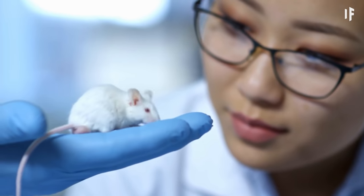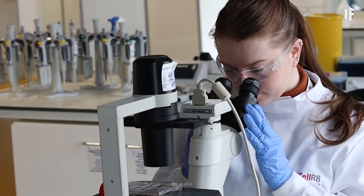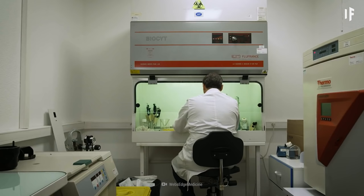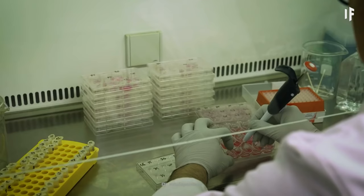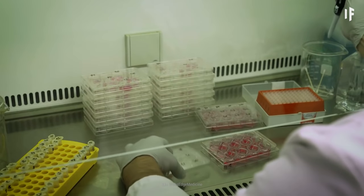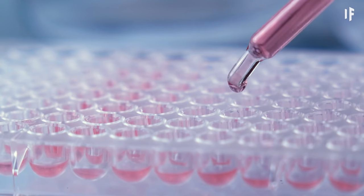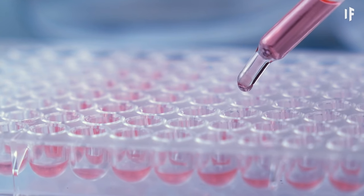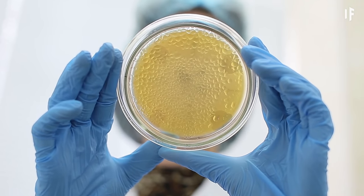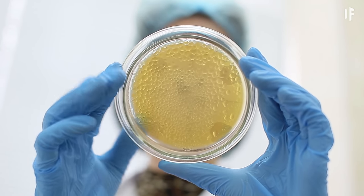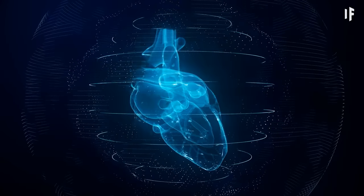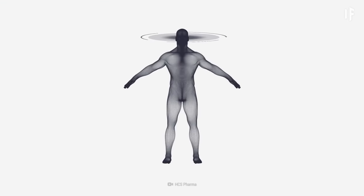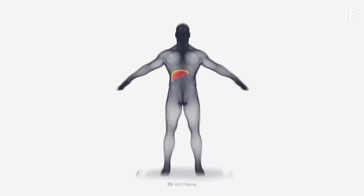So if we stopped animal testing, we'd need to advance in vitro technology. Scientists would take some skin cells from people with a specific illness. They would make the skin cells act more like stem cells. Then, the researchers could convert those cells into any specialized cell in the human body. So they'd have a patient-specific model of a disease in a lab dish.